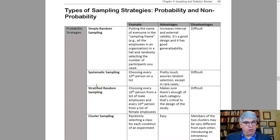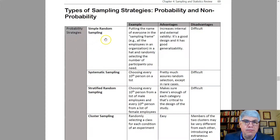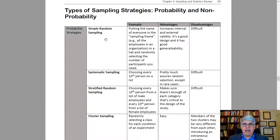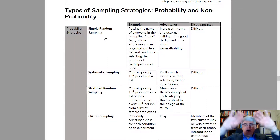In a perfect world, we'd use probability strategies. The gold standard is what's known as simple random sampling — you take everybody in your sampling frame. A sampling frame refers to all the possible people in the world that you could get data from.